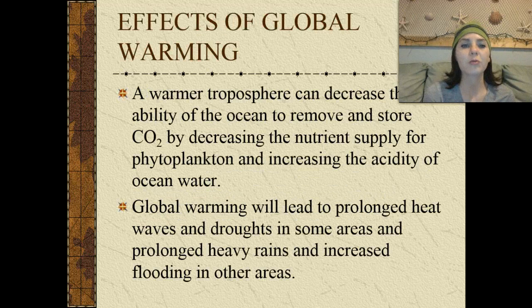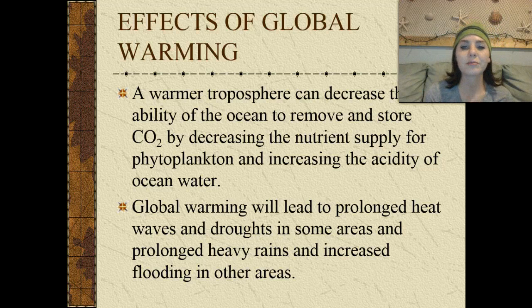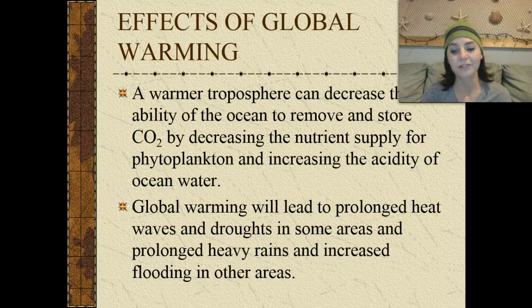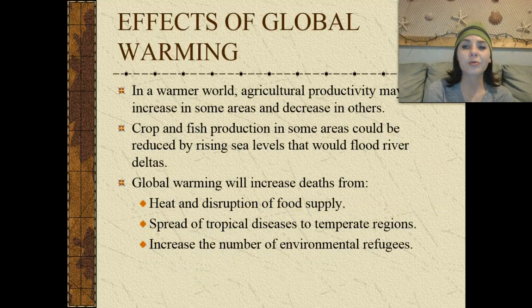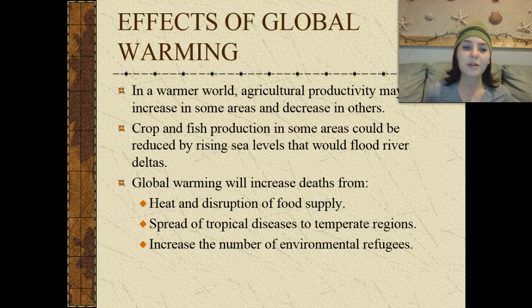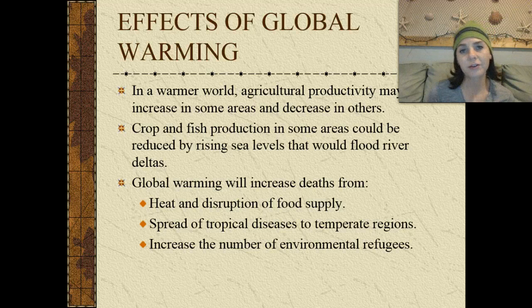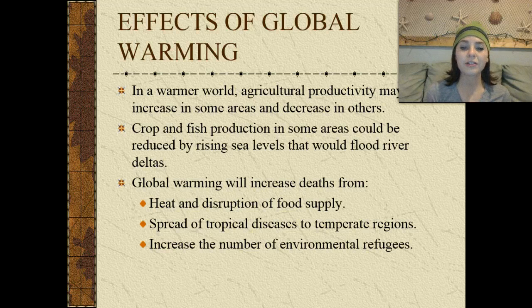What are some of the effects of global warming? A warmer troposphere can actually decrease the ability of the ocean to remove and store carbon dioxide by decreasing the nutrient supply for phytoplankton and increasing the acidity of ocean water. Global warming will lead to prolonged heat waves and droughts in some areas and prolonged heavy rains and increased flooding in others. In a warmer world, agricultural productivity can actually be increased in some areas and decreased in others. Crop and fish production in some areas will be reduced by rising sea levels that could flood river deltas. Global warming will increase deaths from heat and disruption of the food supply. You'll see these effects more in developing countries, a lot more spread of tropical diseases to temperate regions, and a huge increase in the number of environmental refugees.